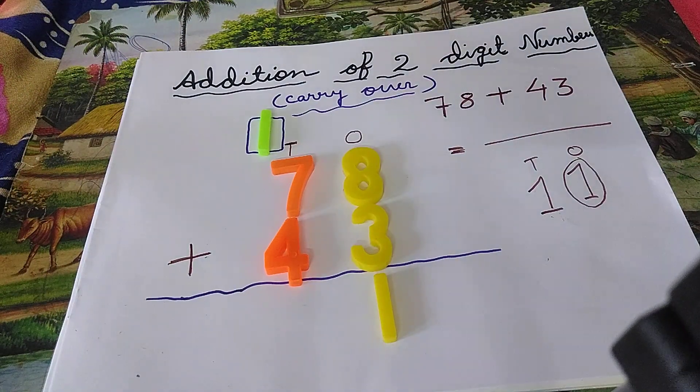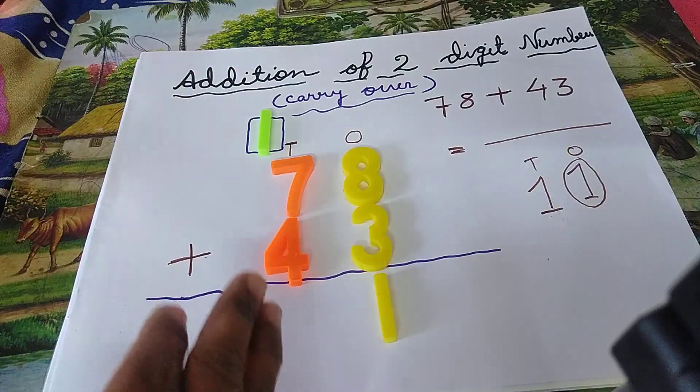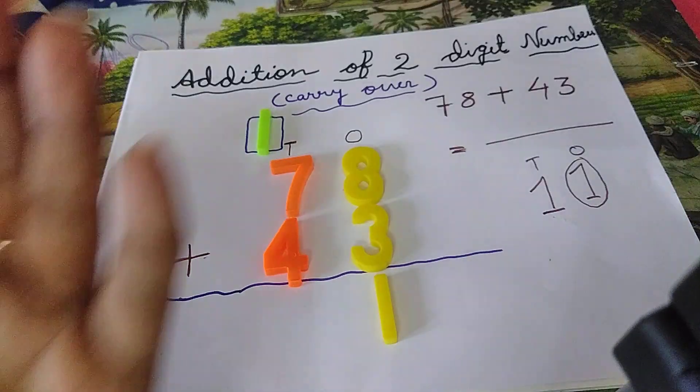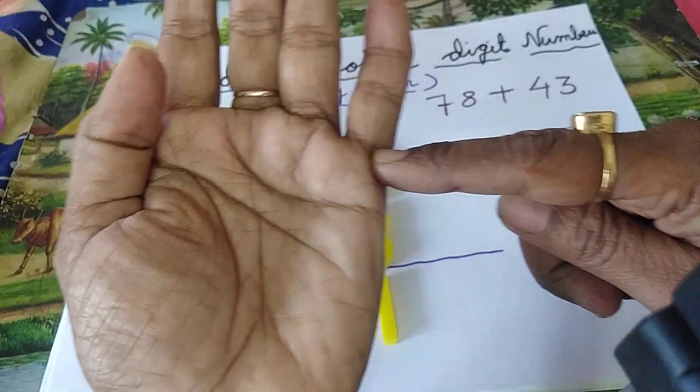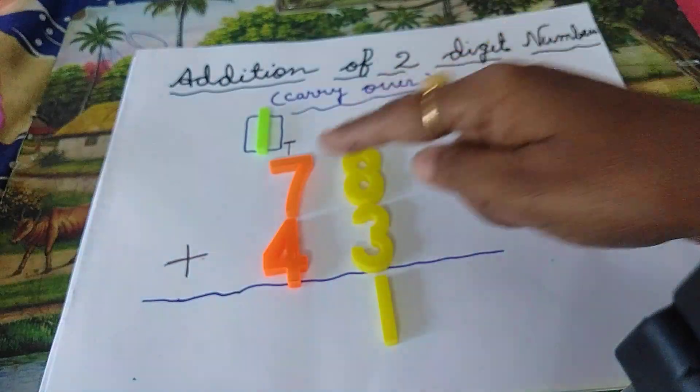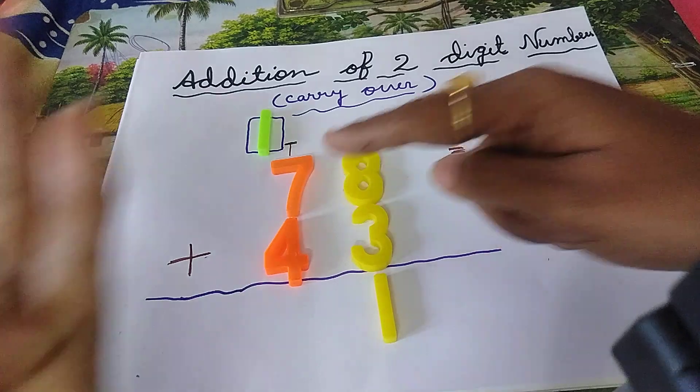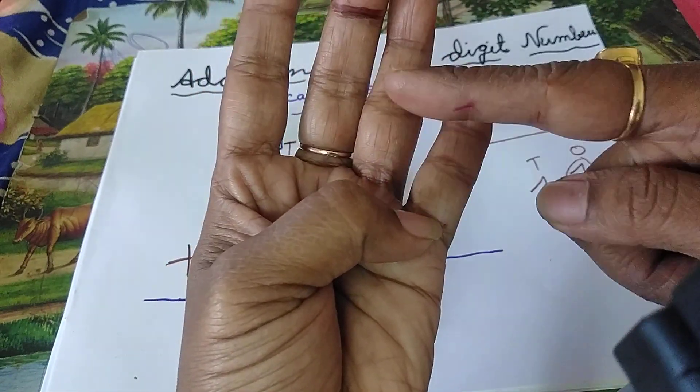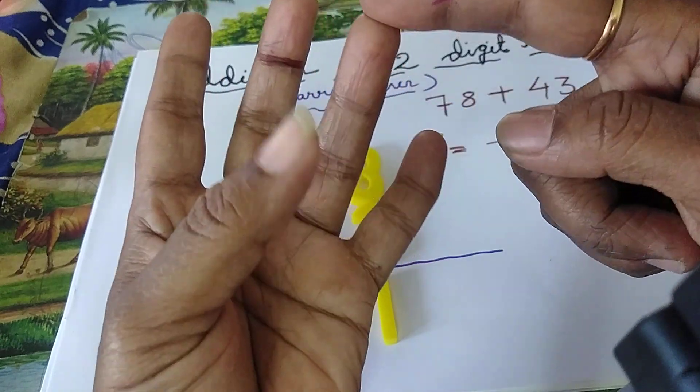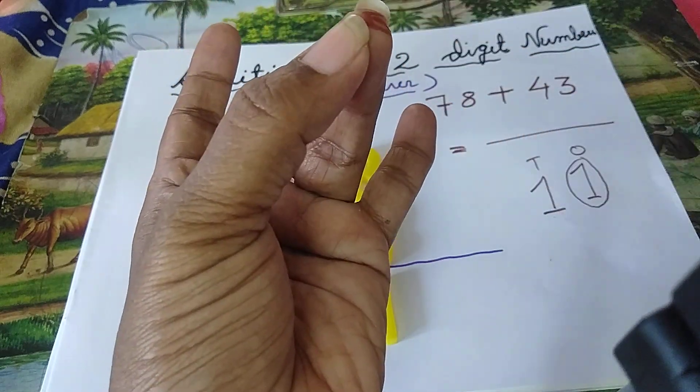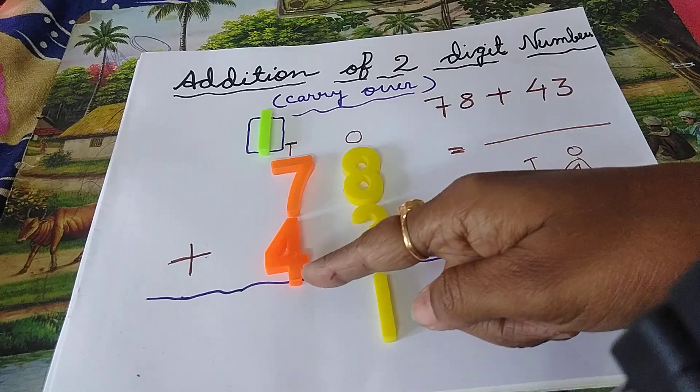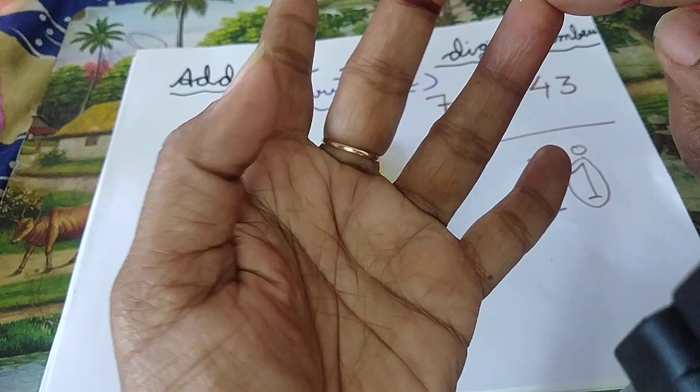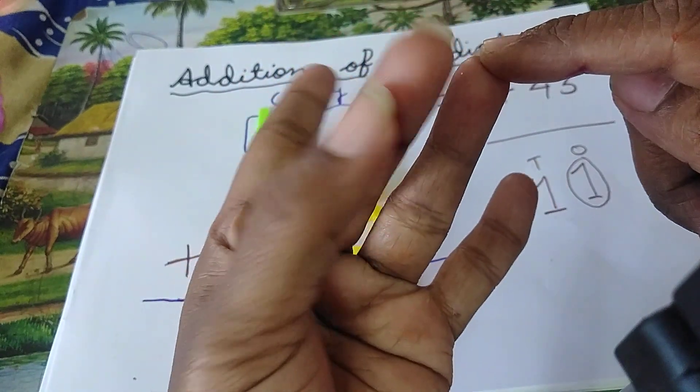Okay, now see children, we have to add these digits. First is one, count one. Okay, the second digit is seven. From the next line count seven: one, two, three, four, five, six, seven. Seven. The third digit is four. Again count more four lines. From the next line: one, two, three, four.